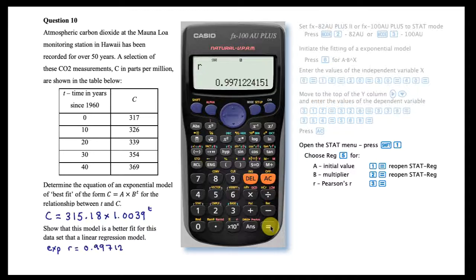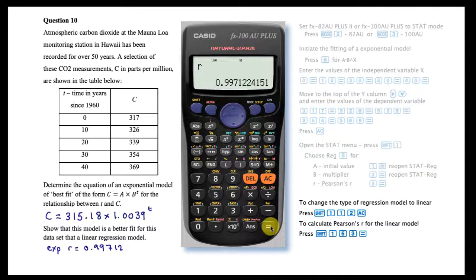To calculate the correlation coefficient R for a linear regression model, change the model type to linear by opening the statistics menu, choosing type by pressing 1 and choosing linear by pressing 2.